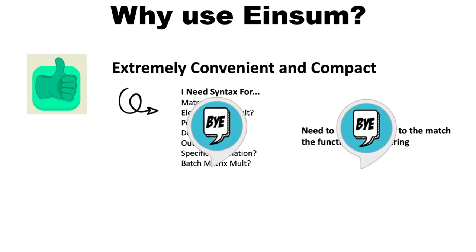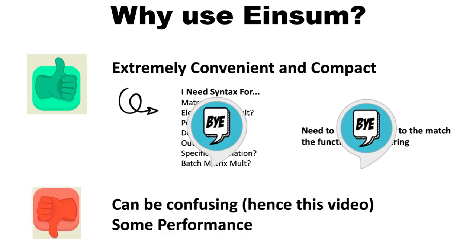So what about the cons of einsum? Well, first of all, it can be a bit confusing, and that's why I'm making this video. Second is that in practice we oftentimes lose some performance because it's not as optimized as a specific function call. But this is a bit of a generalization because einsum is actually faster in some cases too, especially if you're combining multiple calls into a single einsum call.